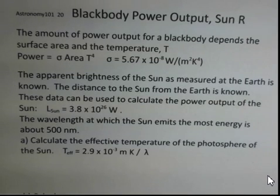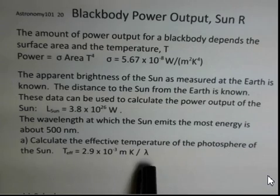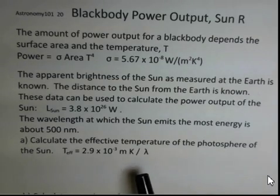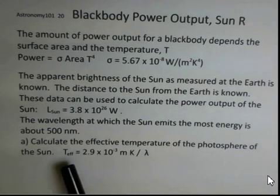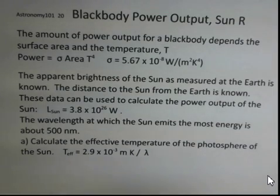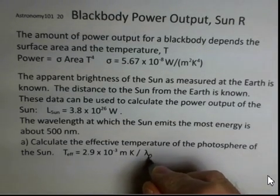So first thing we want to do is find the effective temperature of the photosphere. And again, for blackbodies, we're going to treat the sun as a blackbody. That's an approximation. But there's a relationship between that effective temperature and this peak wavelength. And perhaps I should put a subscript here, peak.